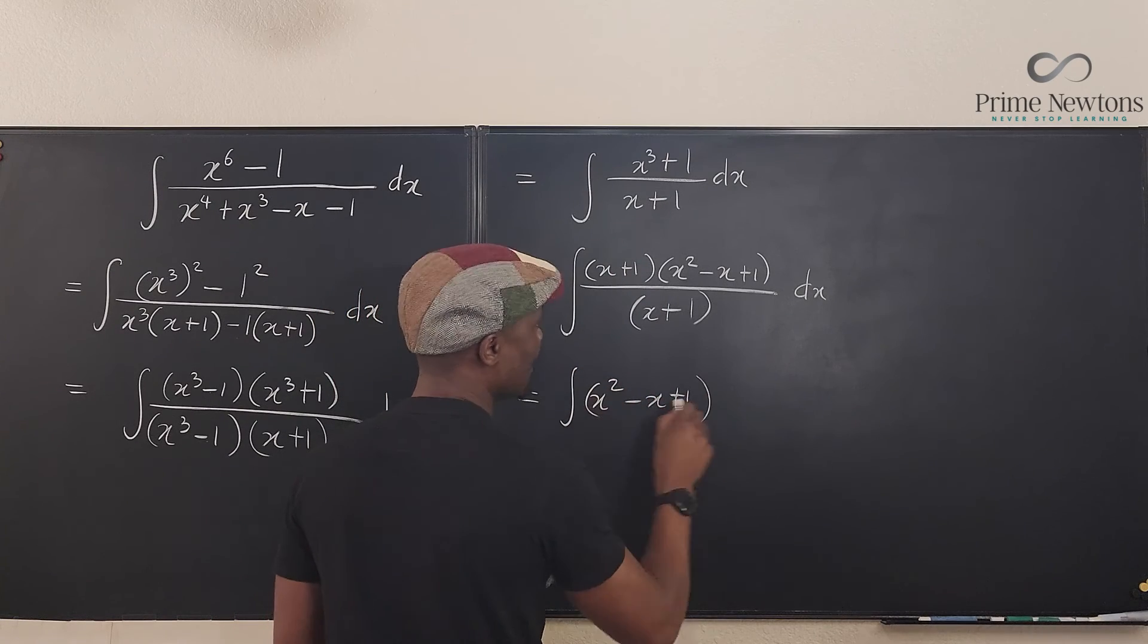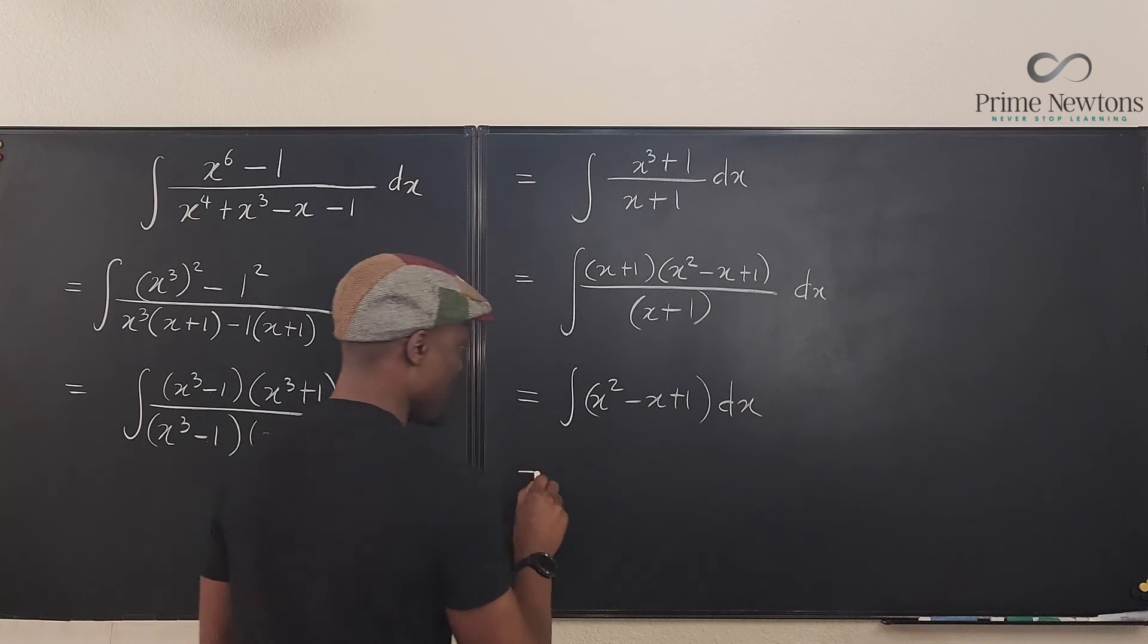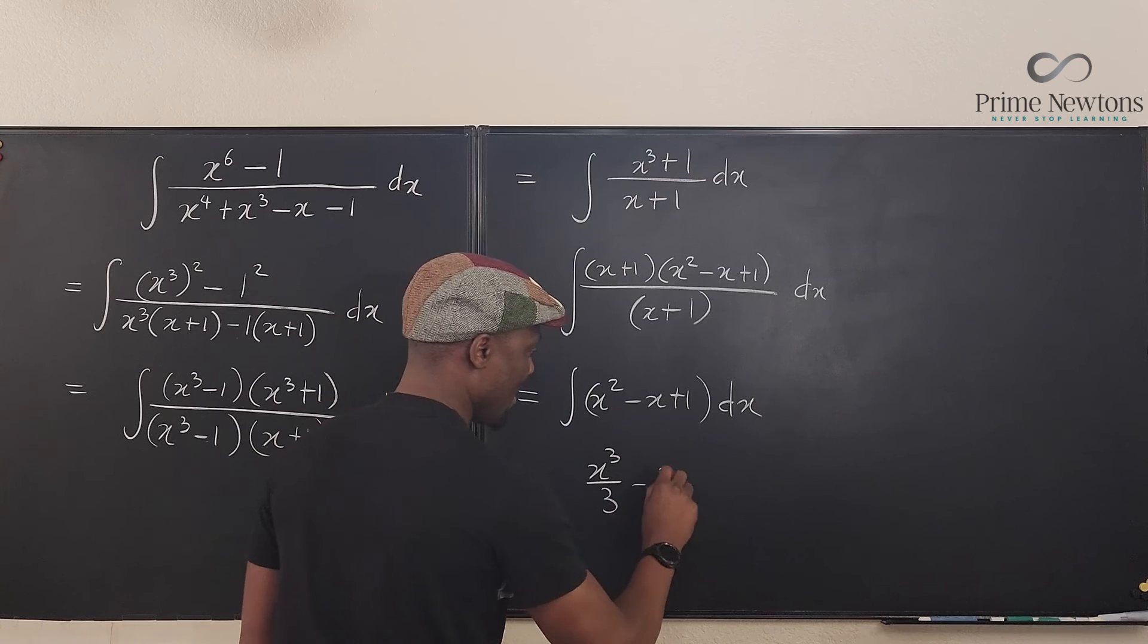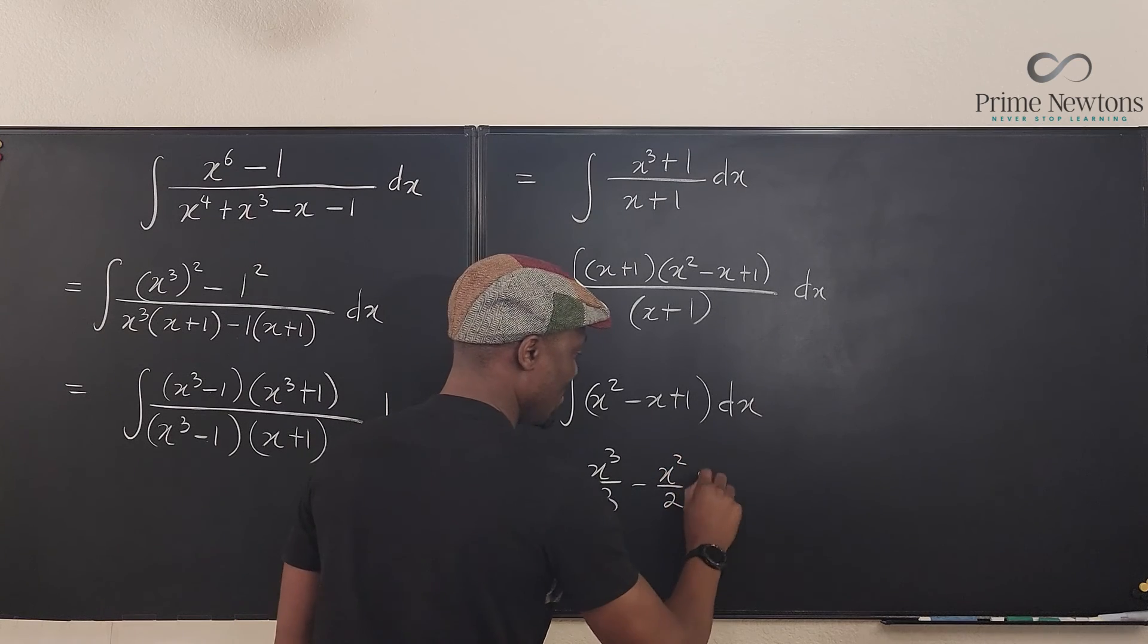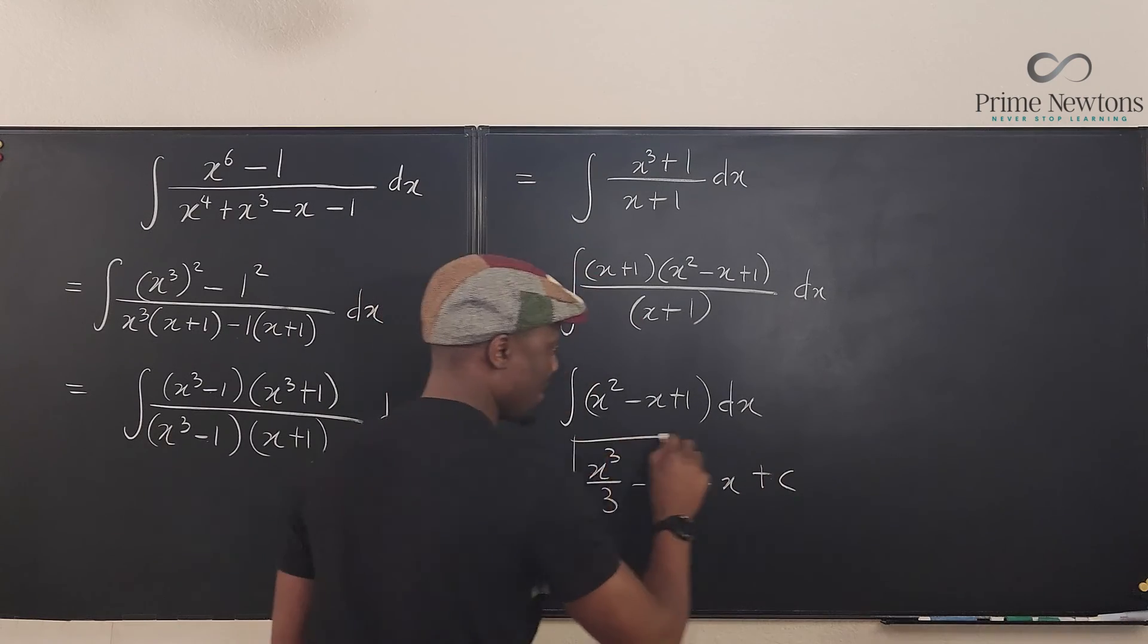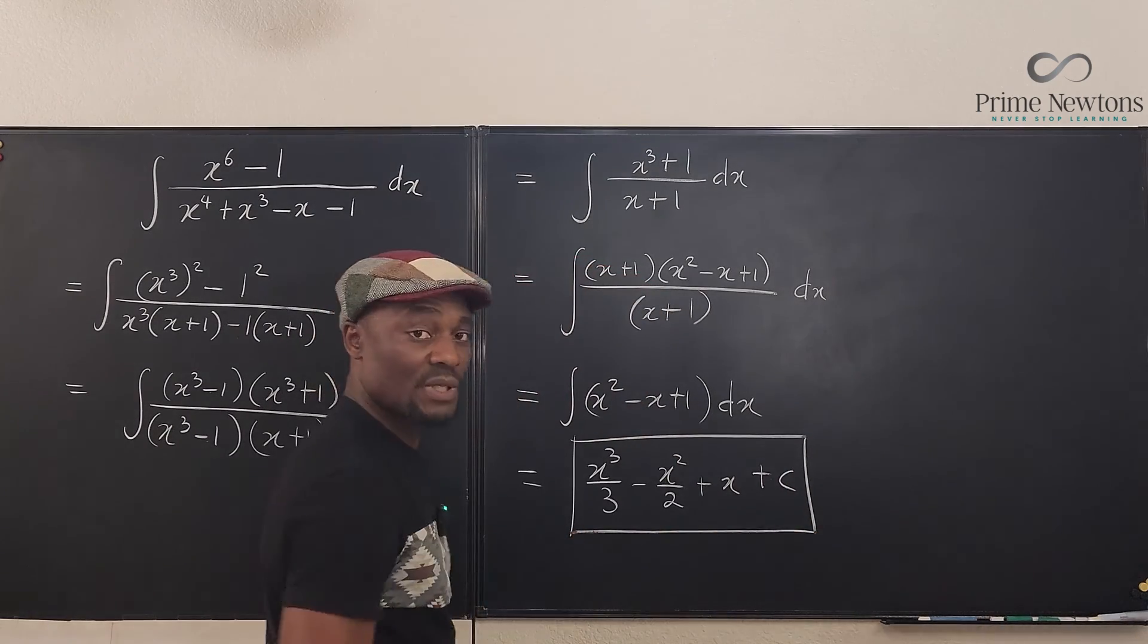Which is going to be x cubed over three minus x squared over two plus x and plus c. This is the answer to this integral. We're done. Okay, you could have used synthetic division or long division to get your answer.